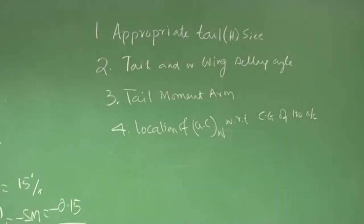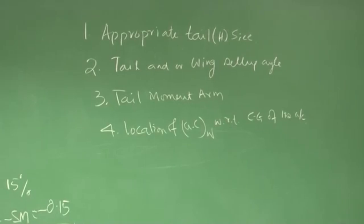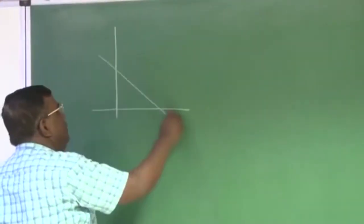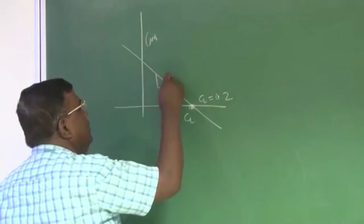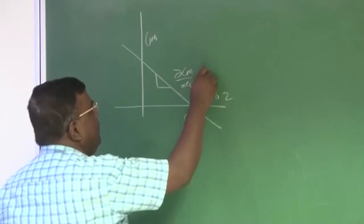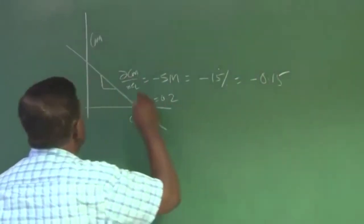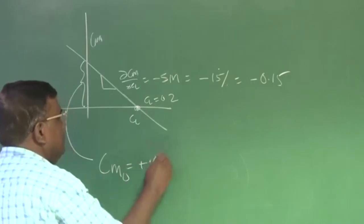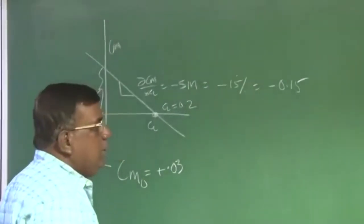This is what a designer will look for when he is trying to stabilize the airplane. And you will see that as I go forward, how simplistically you can get a feel for this number. One way our life has become simpler, that if I know this is Cm, this is CL, I know what CL I should design for, let us say CL 0.2. And I know what is the slope here, which is dCm/dCL, which is minus static margin, which is minus 15 percent. So this is typically minus 0.15, which tells me what is this value, Cm naught equal to plus 0.03.